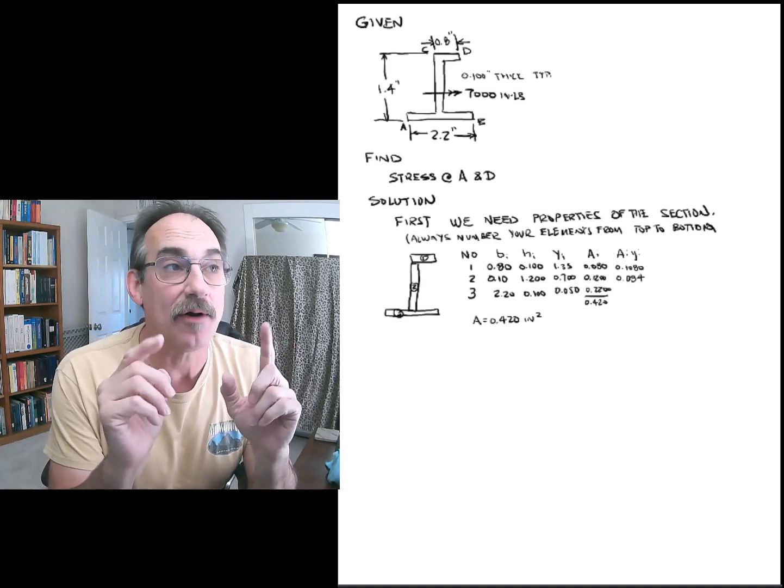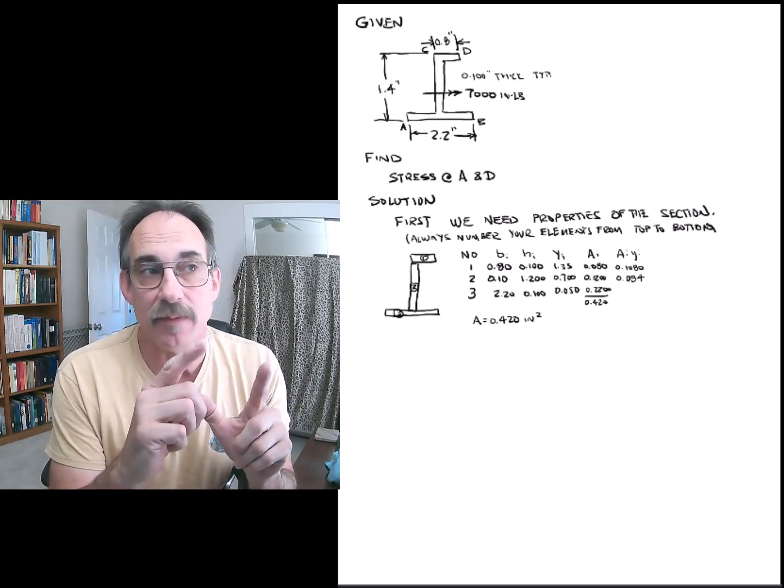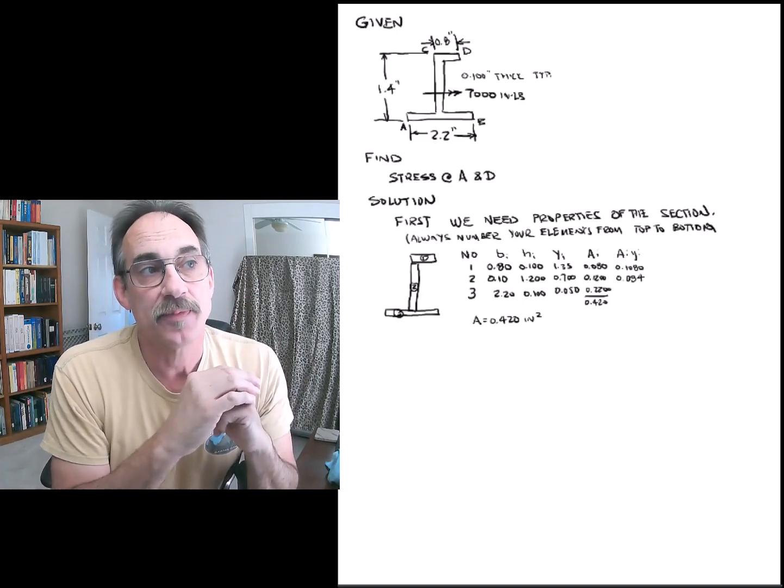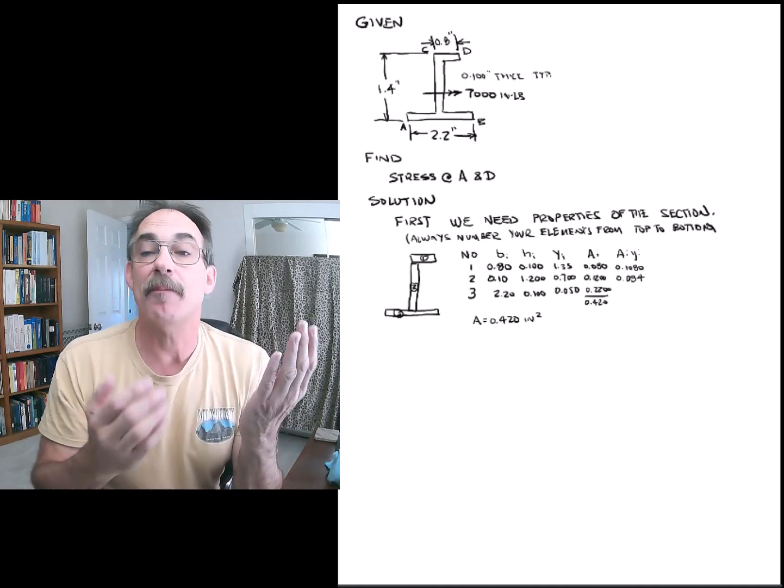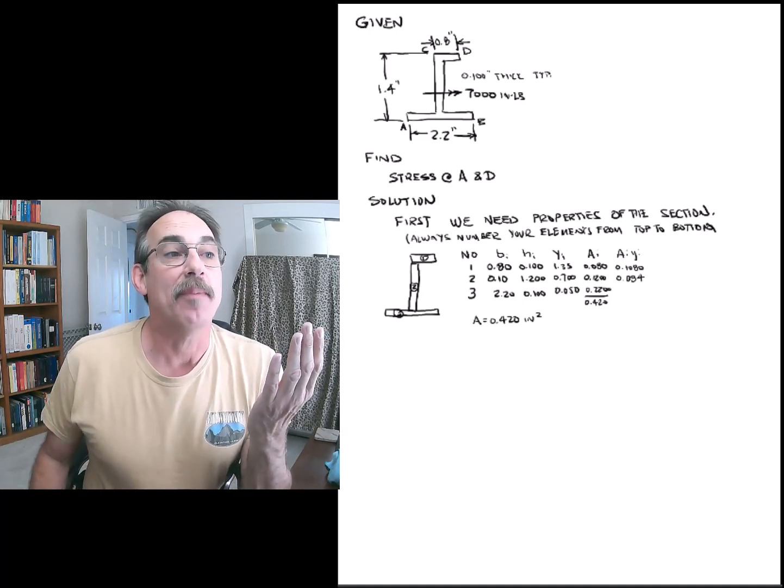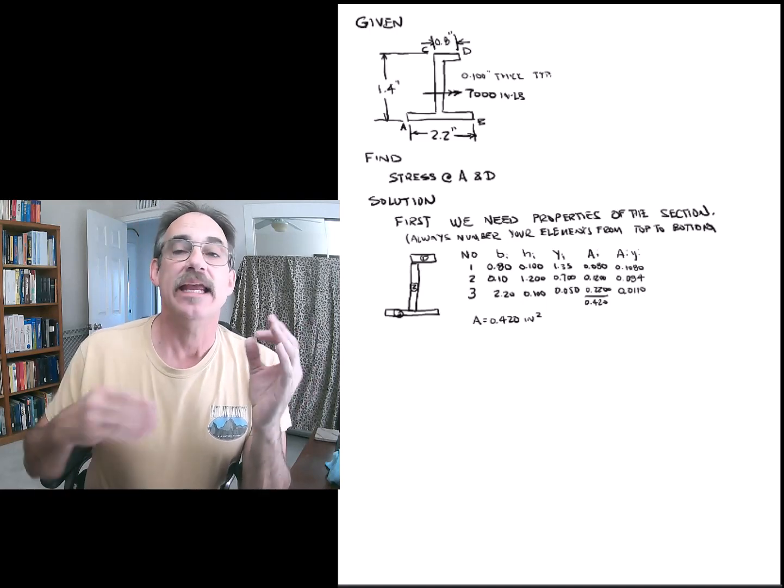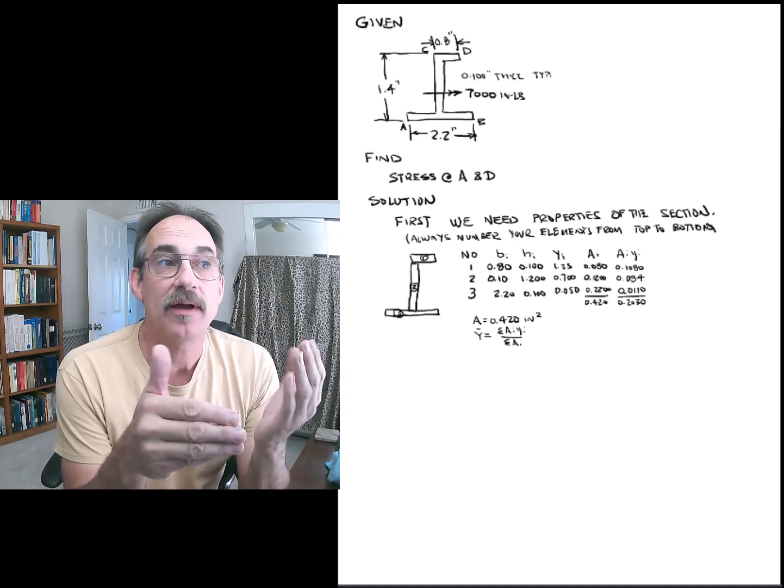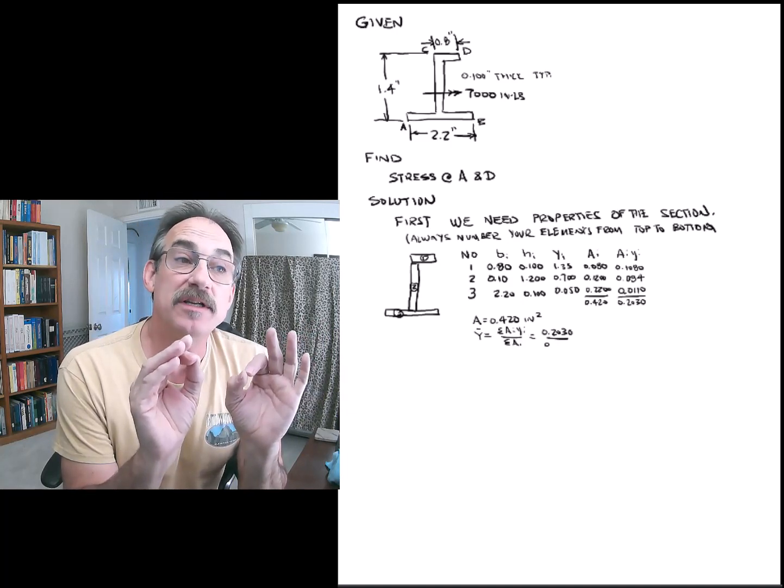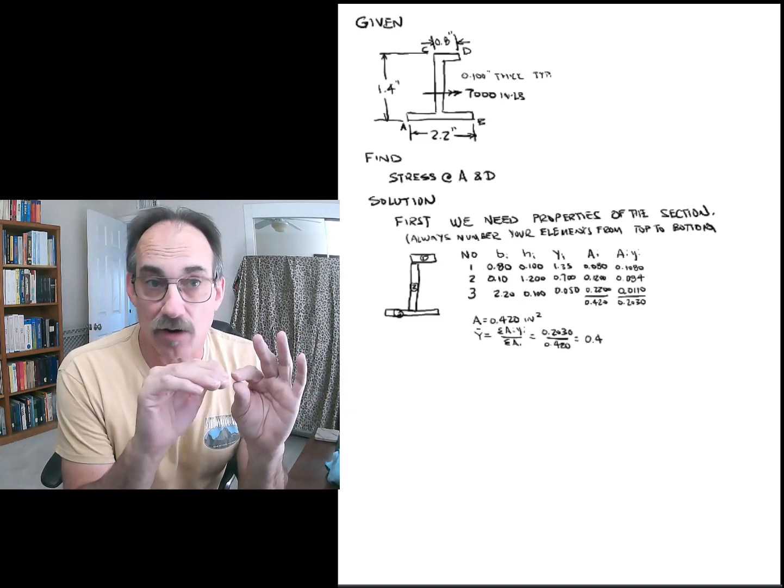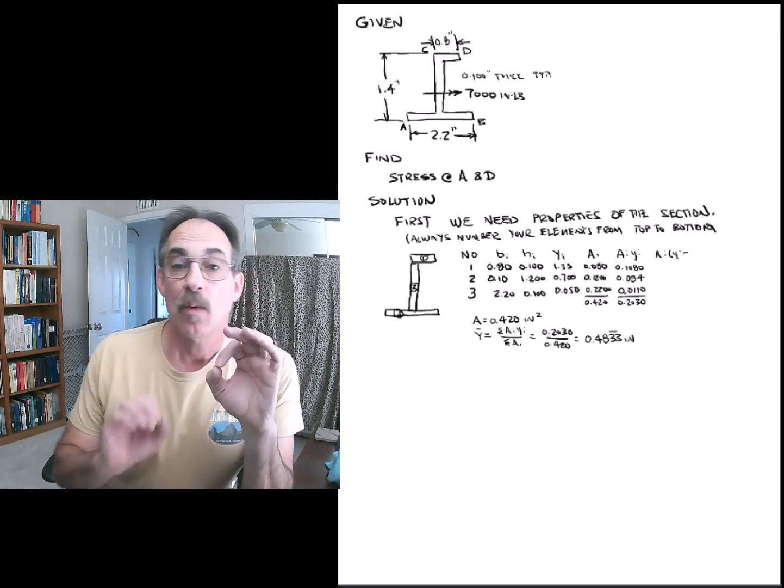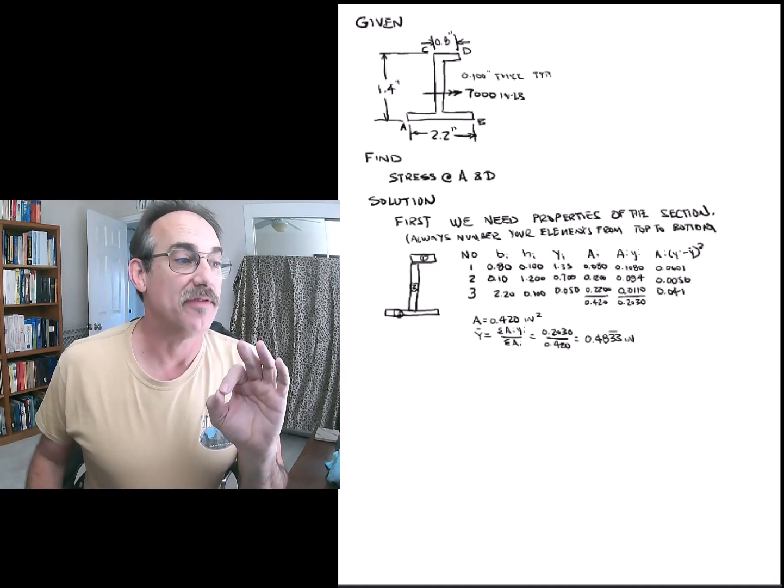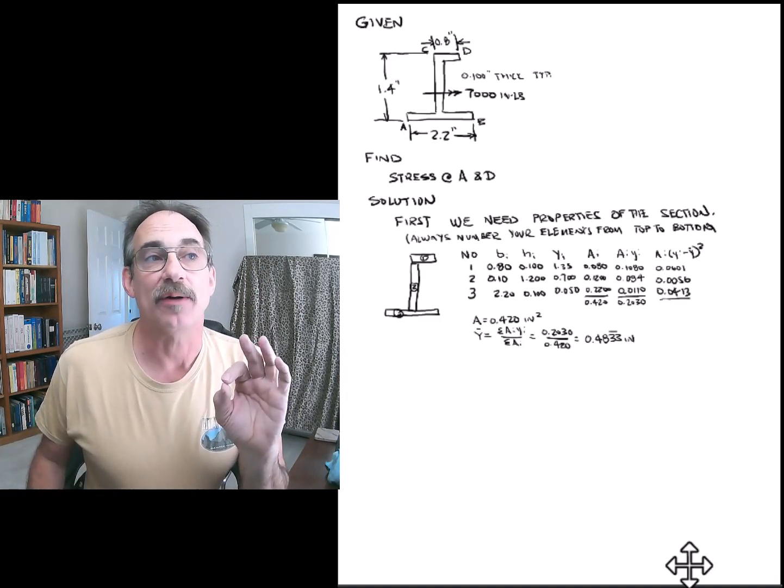Then we calculate the area by multiplying our B times our H dimension for each element. We sum up the areas, and that's the area of the section. We multiply each area by its Y bar and populate that column or table. Sum those up. That's the first moment of the area about the bottom or about our reference axis. Our Y bar, our centroid of the section, is just the sum of the AYs over the sum of the A's. And you see we calculated that there.